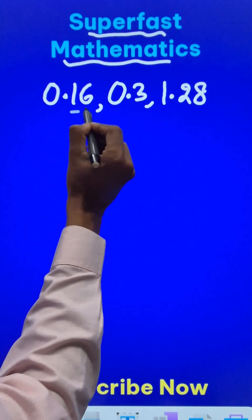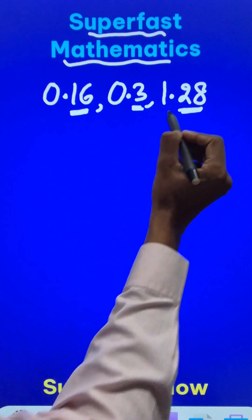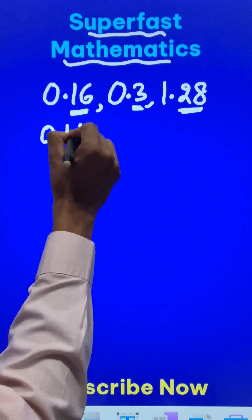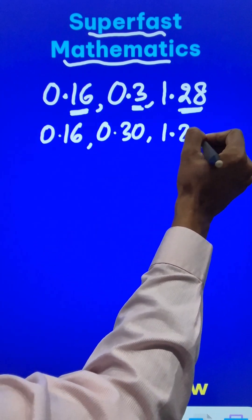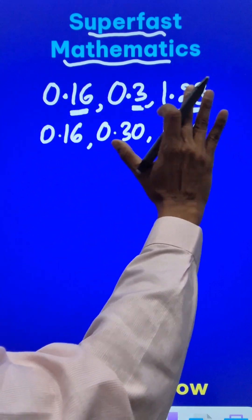The first thing is you should equate the number of decimal places in all the numbers. So 0.16, and then 0.3 will be written as 0.30, and 1.28 already has two decimal places. Now just forget the decimal.